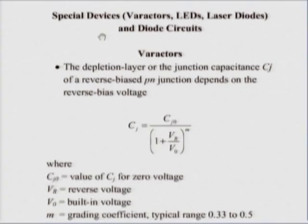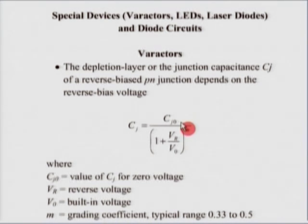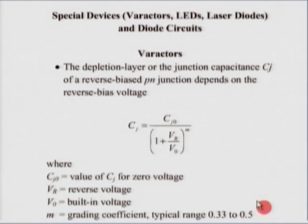When you reverse bias a p-n junction, you have a depletion capacitance, and the width of the depletion region depends on the reverse bias. Because of this, the junction capacitance C_j of a reverse biased p-n junction can be related to the reverse bias voltage by the equation: C_j = C_j0 / (1 + V_r/V_0)^m, where C_j0 is the value of C_j at zero voltage, V_r is the reverse voltage, V_0 is the built-in voltage, and m is the grading coefficient. Typically for a p-n junction diode, m is of the order of 0.3 to 0.5.